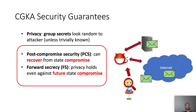The privacy guarantees we require are that group secrets should look random to the attacker unless they are trivially known. Since sessions are long-lasting, we also require post-compromise security — we should be able to recover from state compromise via normal protocol execution. And we also require forward secrecy, which means privacy should hold even against future state corruption.